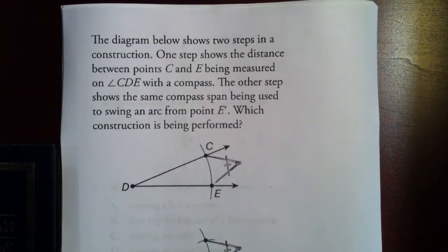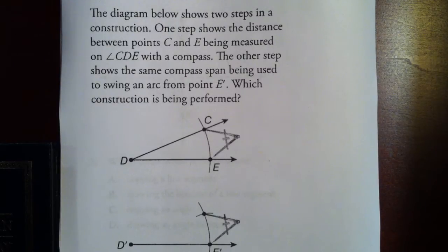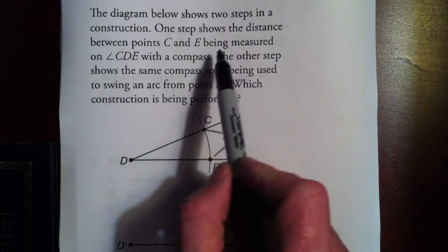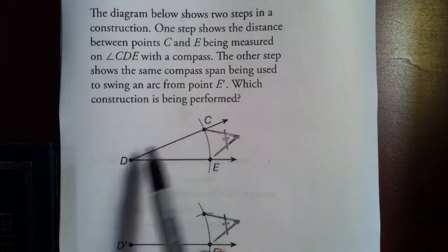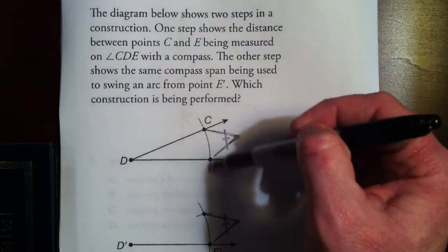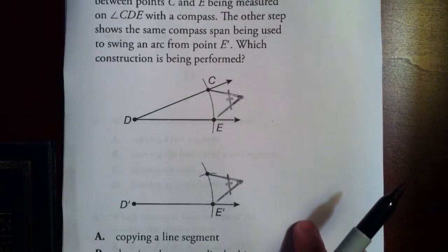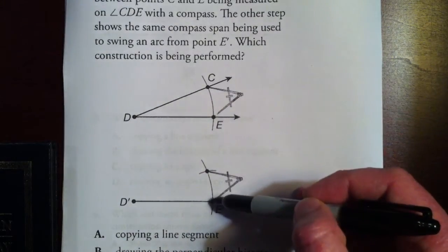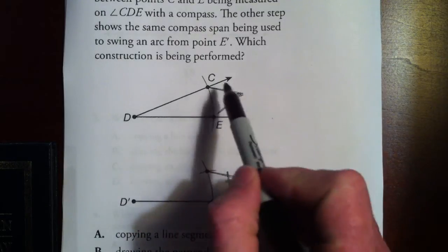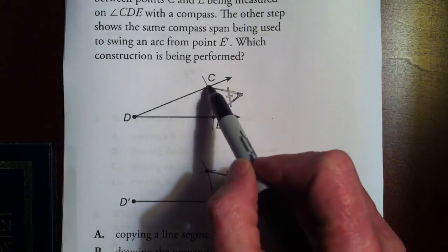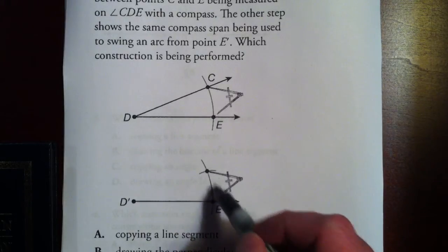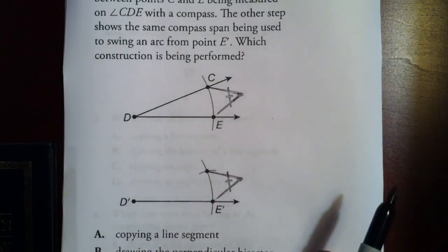Here's a longer word problem. The diagram shows two steps in a construction. One step shows the distance between points C and E being measured on angle CDE — we're taking a compass and measuring how far apart C and E are. The other step shows the same compass being used to swing an arc from E prime, using the same compass measure.